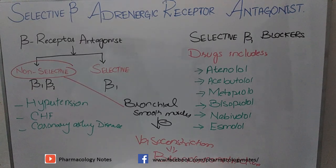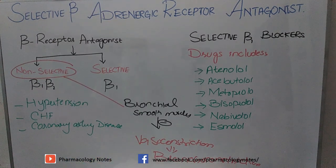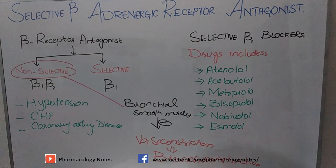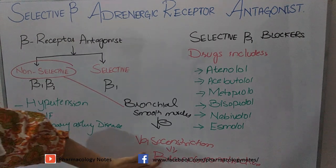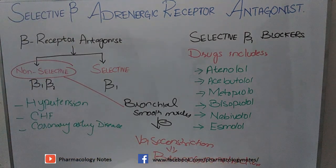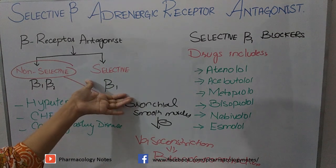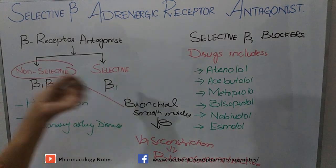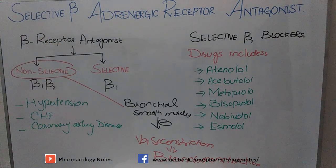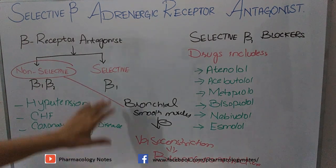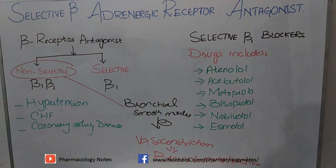When using a drug for hypertension that causes bronchoconstriction, it becomes problematic for patients with asthma or COPD. This bronchoconstriction is not a desirable effect in those cases. To eliminate this side effect, a new class of drugs is used: selective beta-adrenergic receptor antagonists, or selective beta-blockers, which are used in hypertension but do not cause bronchoconstriction. These drugs are preferred for patients with COPD or asthma.